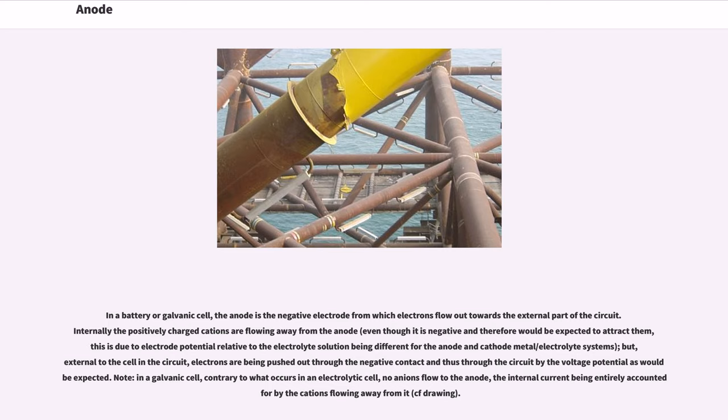Note, in a galvanic cell, contrary to what occurs in an electrolytic cell, no anions flow to the anode; the internal current being entirely accounted for by the cations flowing away from it.